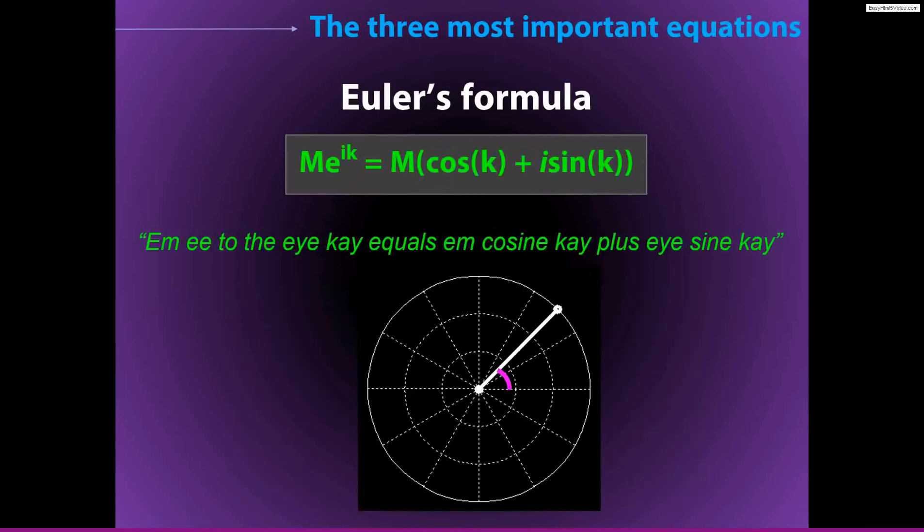The third important equation or formula is called Euler's formula, and it is pronounced m e to the i k equals m cosine k plus i sine k. What Euler's formula allows us to do is two things. First, it allows us to easily move back and forth between different representations of the same information.